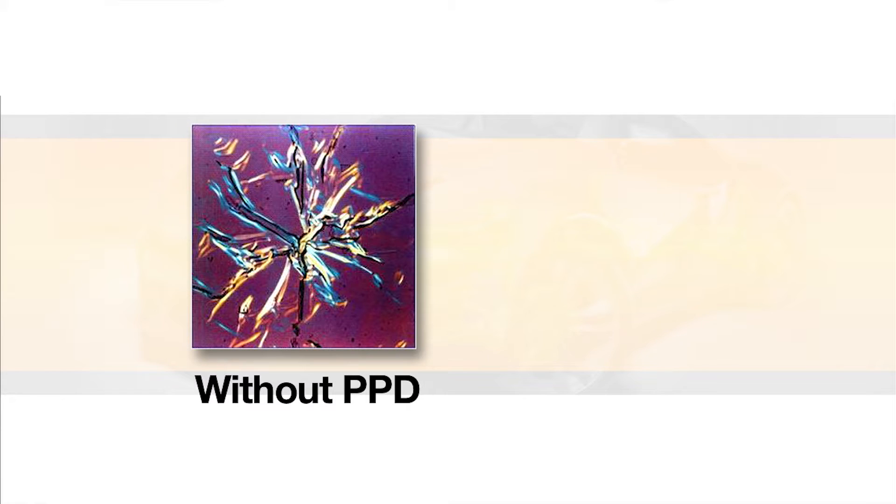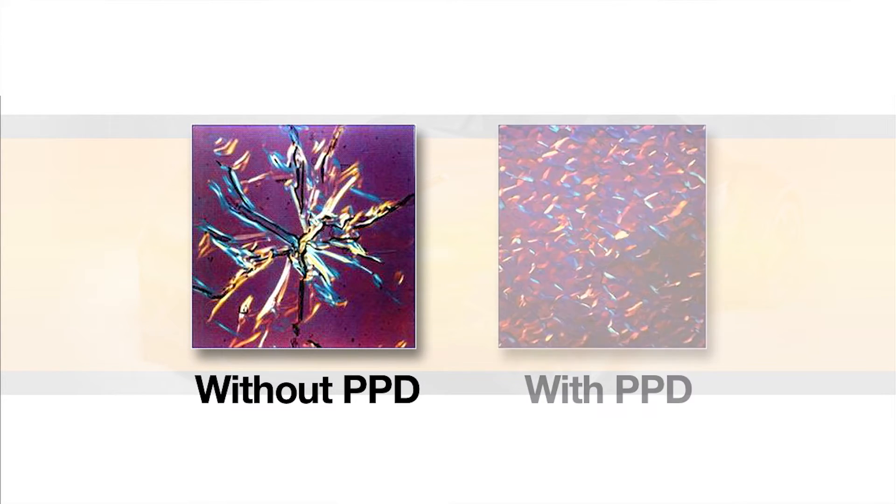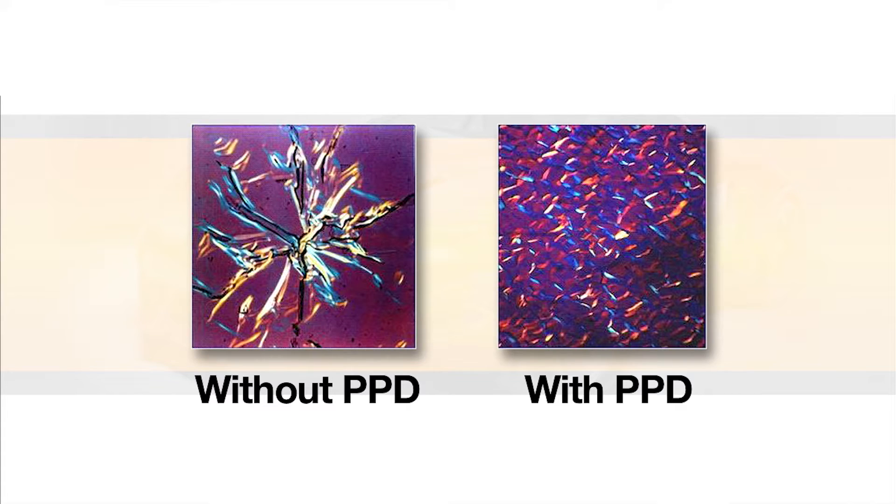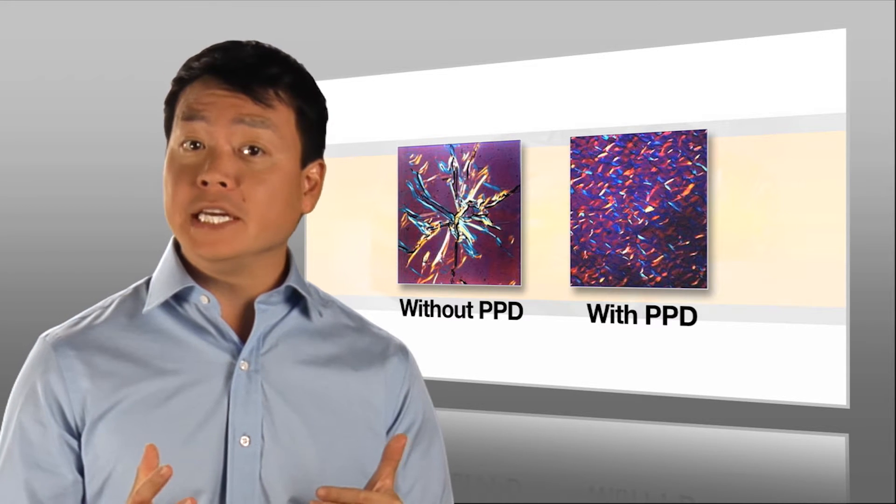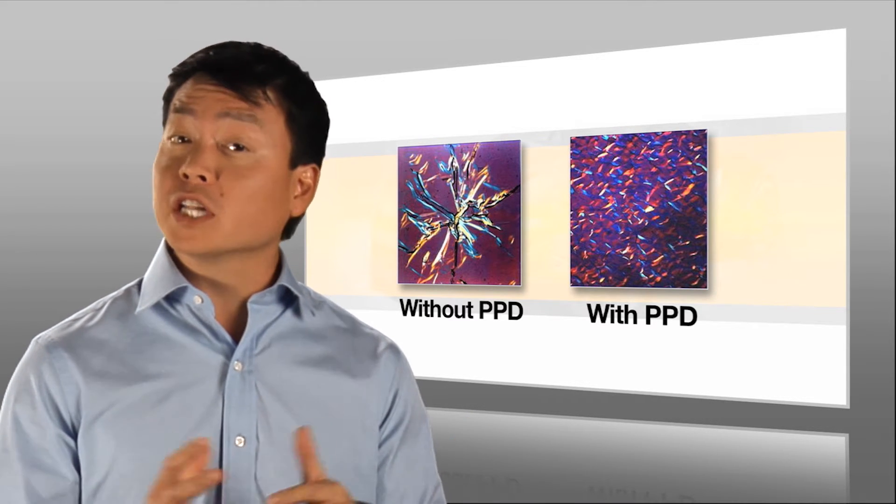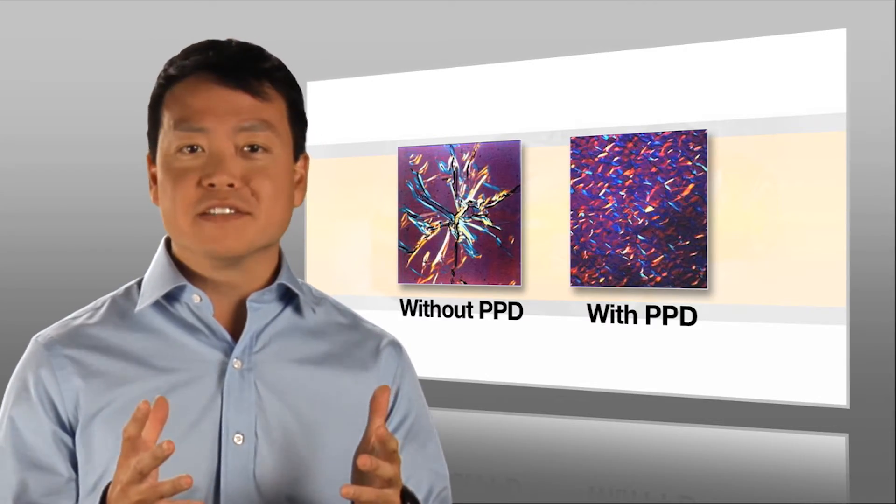Base oils like mineral oils have a certain level of wax. The PPD functions on a chemical level by changing the crystal structure of the wax so that small free-moving particles of wax are formed. Without the PPD, larger particles would form quickly, thickening the oil and raising the viscosity.